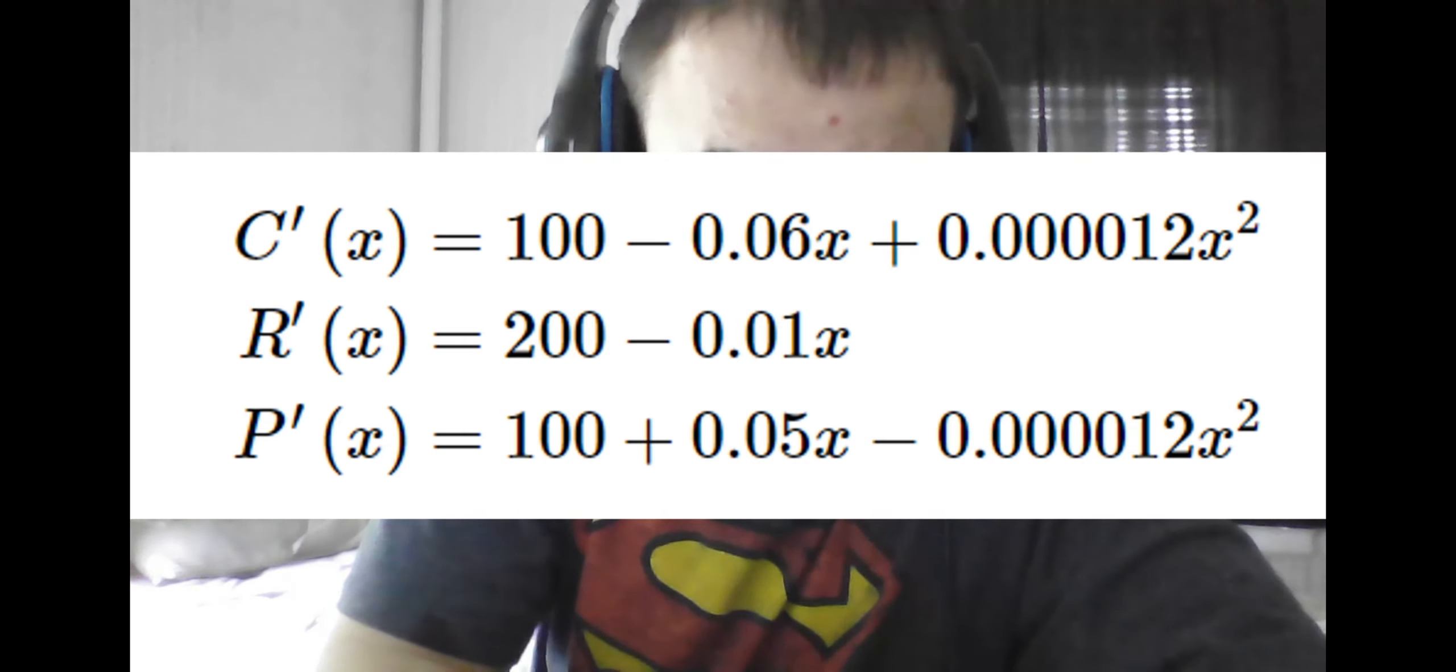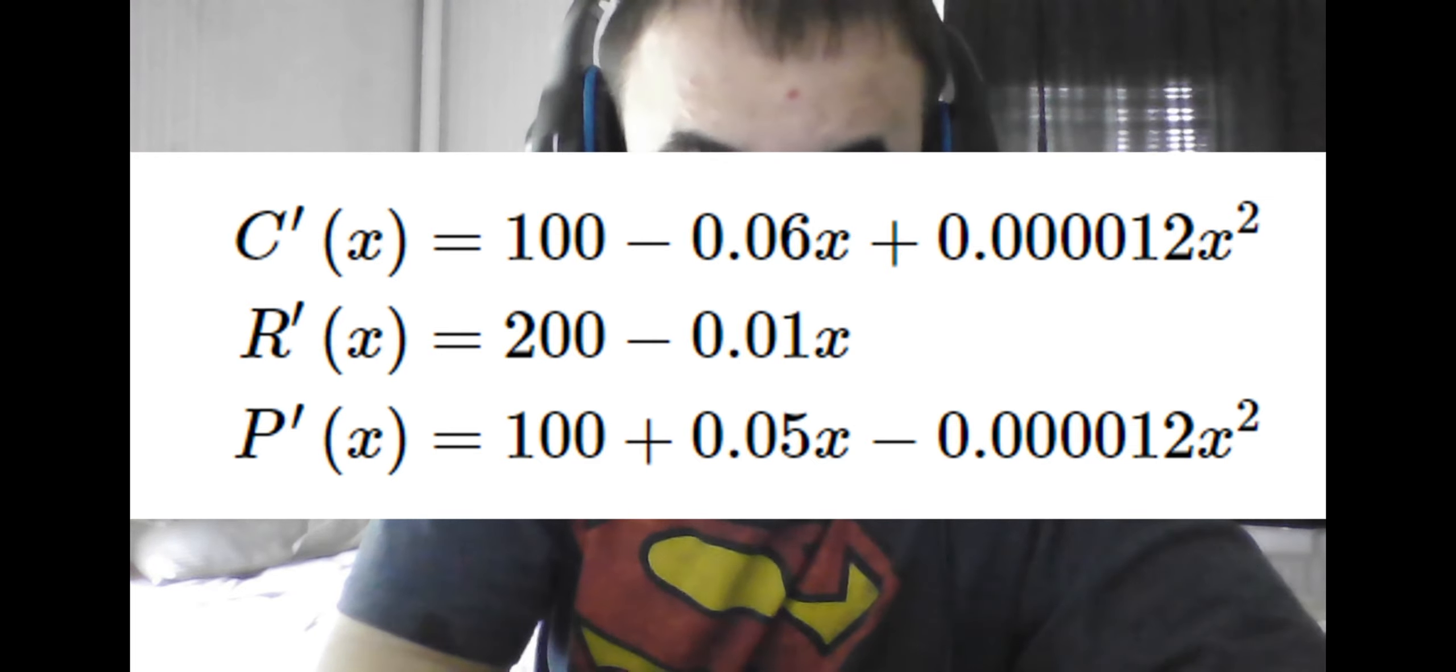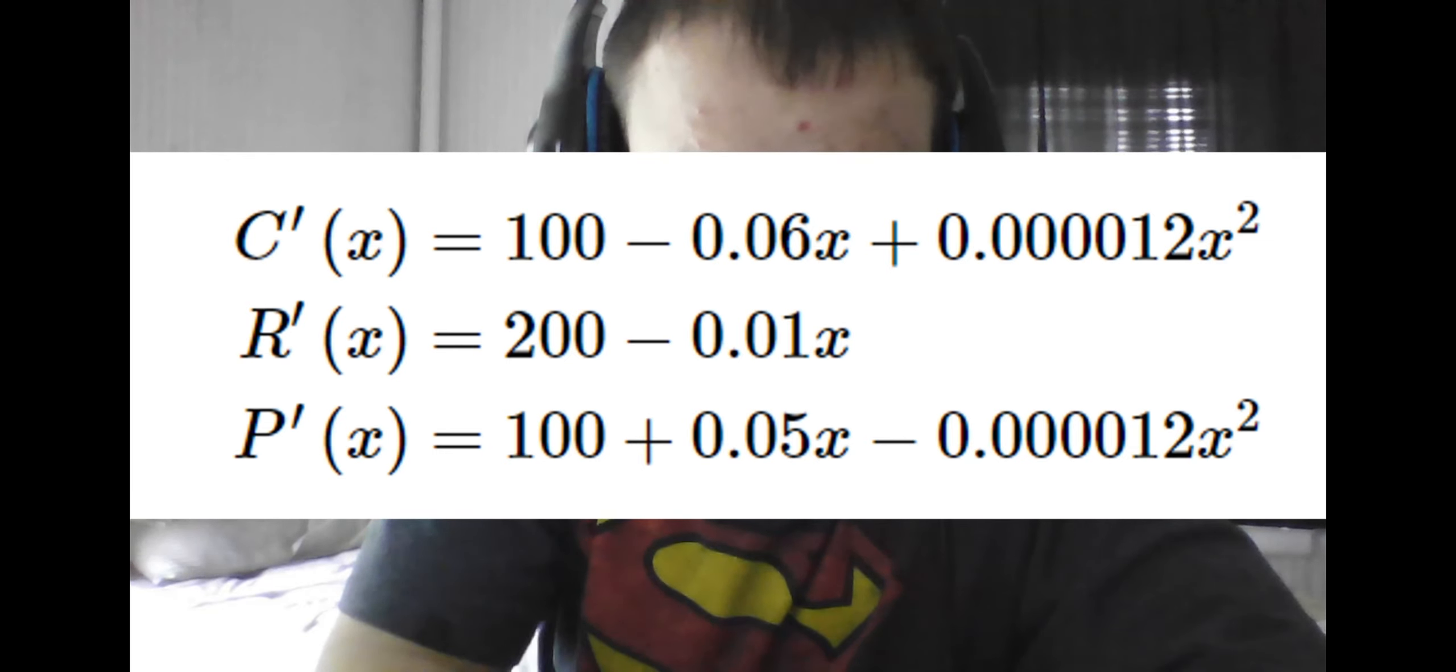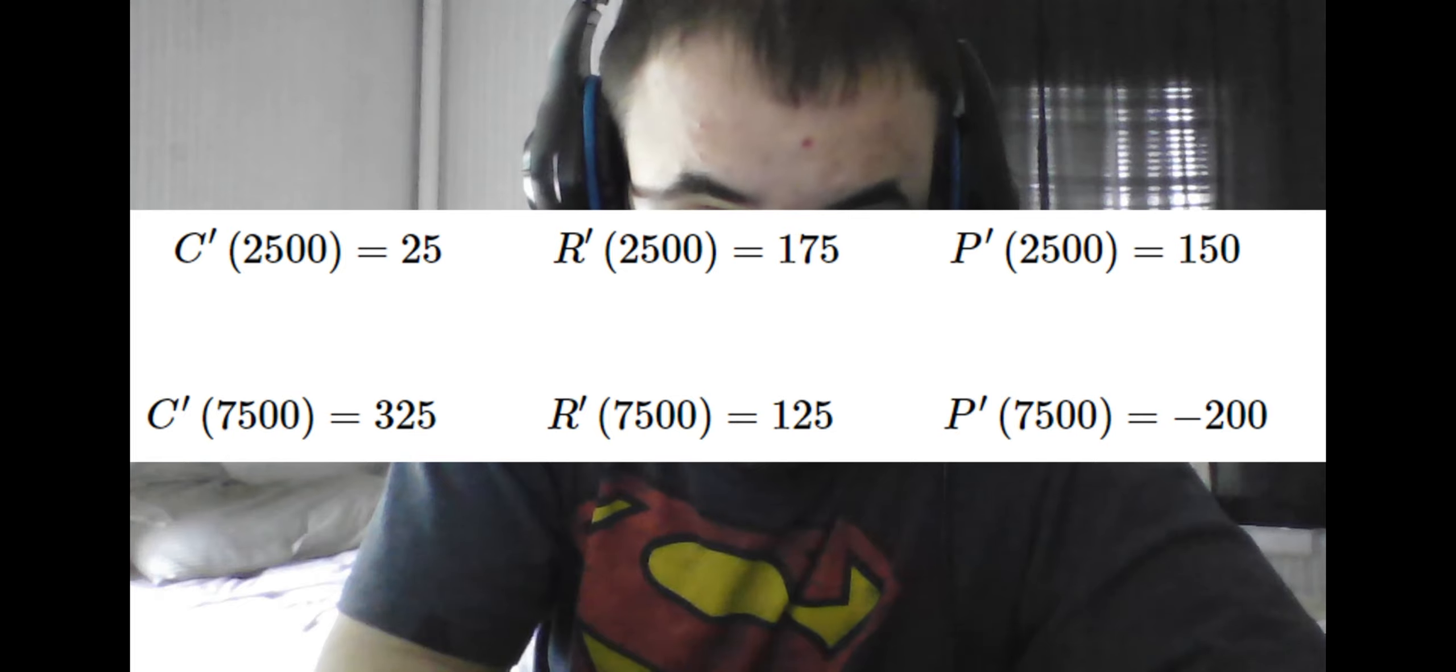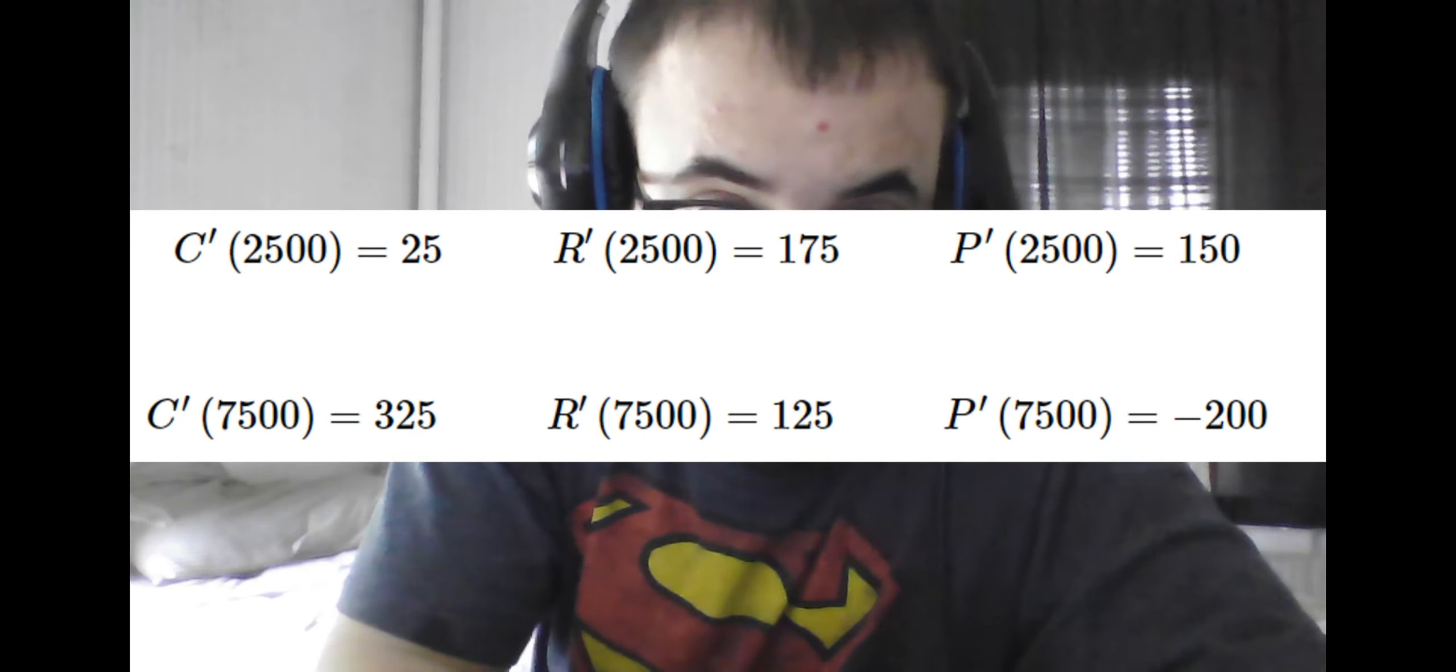We plug in x equals 2,500 and x equals 7,500 for all of these marginal functions, so we see at 2,500 the marginal cost is $25.